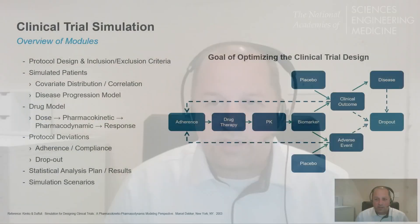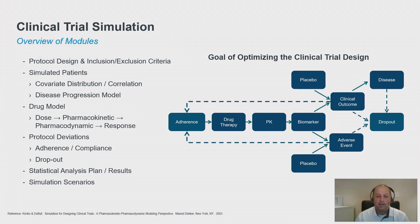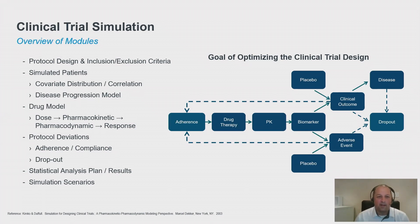The goal of clinical trial simulation is to optimize the clinical trial design. The way we go about this is to look at many of the elements that influence the scientific outcomes of a clinical trial. The first is to look at the different types of protocol design. We also need to generate elderly patients for simulations and how to apply inclusion-exclusion criteria and how that impacts the clinical trial results.